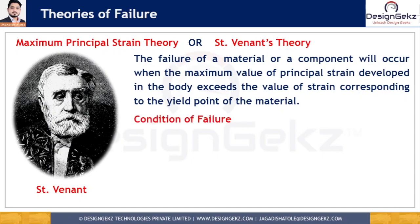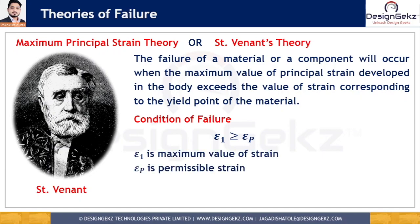Mathematically, the condition of failure according to this theory can be written as epsilon 1 greater than epsilon p, where epsilon 1 is the maximum value of strain and epsilon p is the permissible strain. This permissible strain is the ratio of the strain corresponding to the yield point of that material to the factor of safety — that is, permissible strain equals yield strain divided by factor of safety.